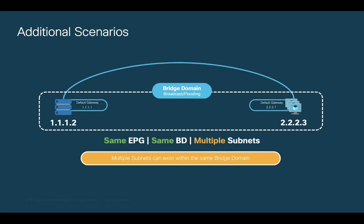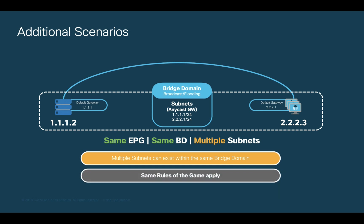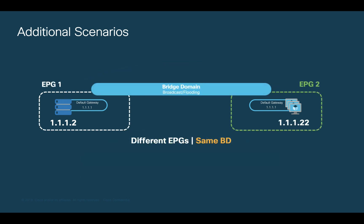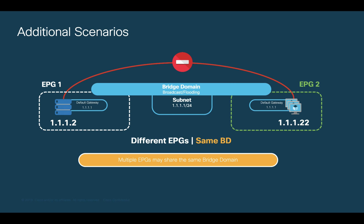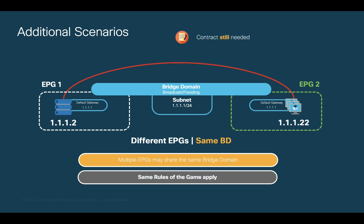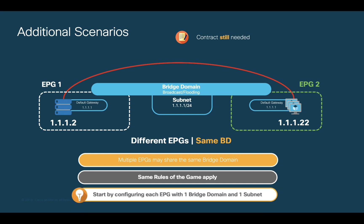There may be other ways of using EPGs and bridge domains. For example, you may assign multiple subnets to a single bridge domain associated to a single EPG — the same fundamental rules still apply. It does not matter that VMs are in different subnets; as long as they belong to the same EPG and there's routing, there will be communication. Similarly, if you had the same bridge domain with the same subnet used in endpoints assigned to different EPGs, there would not be communication until a contract is configured. I recommend starting by associating one dedicated bridge domain with only one subnet to each EPG you create.